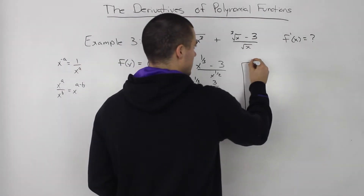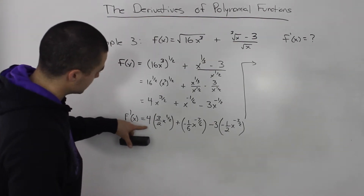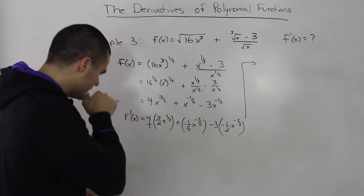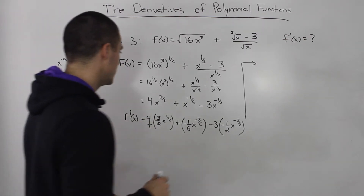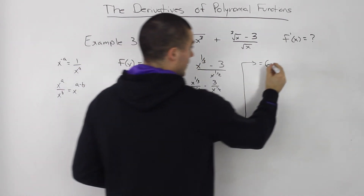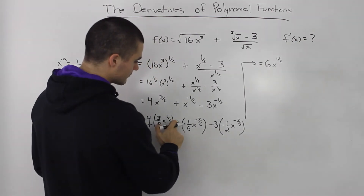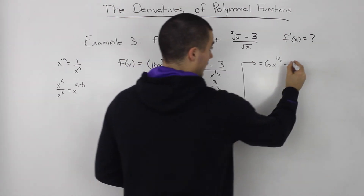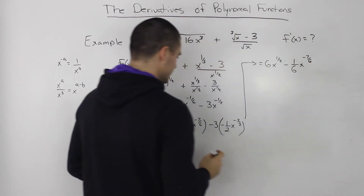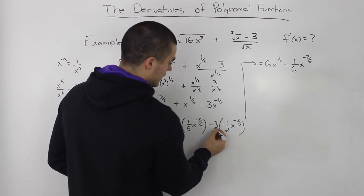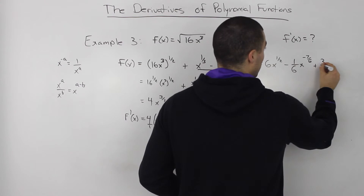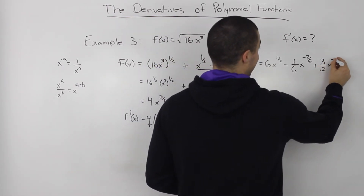Now we can multiply the 3 over 2 and the 4: 4 times 3 is 12, and the denominator is 1 times 2, so 12 over 2 is just 6. We keep x to the power of 1 half. The plus negative becomes a negative, giving us negative 1 over 6 x to the negative 7 over 6. Then negative 3 times negative 1 half gives positive 3 over 2, so we have positive 3 over 2 x to the negative 3 over 2.